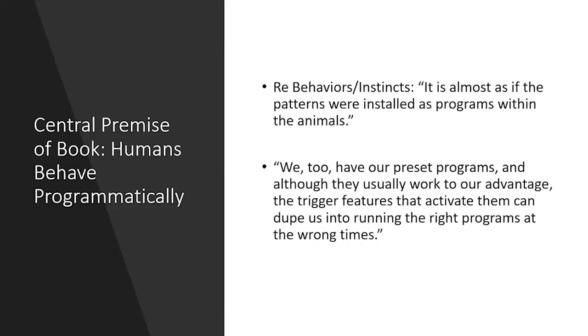Here's a key quote: 'We too have our preset programs, and although they usually work to our advantage, the trigger features that activate them can dupe us into running the right programs at the wrong times.' That takes me to Cialdini's conflicted message. On one hand, he's trying to identify the levers of influence and principles of persuasion so that we can defend ourselves against them — building a critical awareness that allows us to avoid being harmed by these automatic programmatic responses.